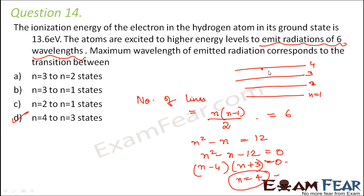The possible transitions from n = 4 are: 4→3, 4→2, and 4→1. For wavelength to be maximum, the frequency should be minimum, meaning the energy difference should be minimum. Therefore, the transition from n = 4 to n = 3 would give the maximum wavelength.